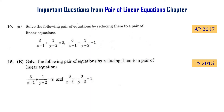Solve the following pair of equations by reducing them to a pair of linear equations. The first equation is: 5 by (x minus 1) plus 1 by (y minus 2) equal to 2. The second equation is: 6 by (x minus 1) minus 3 by (y minus 2) equal to 1.